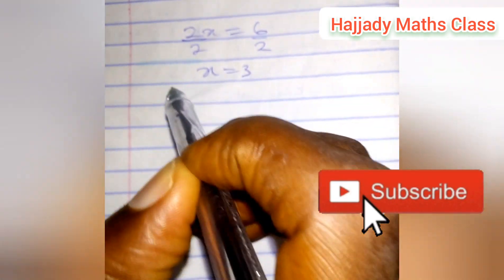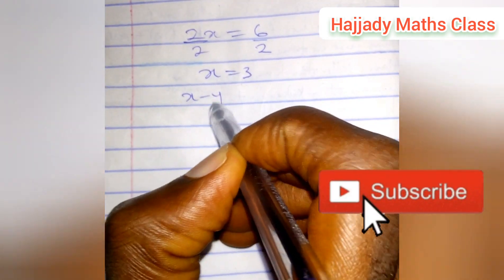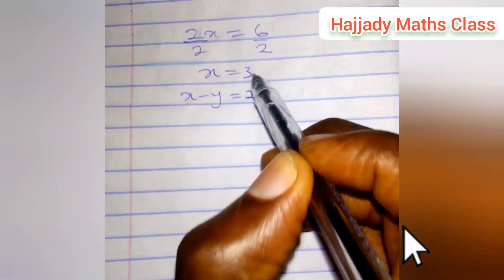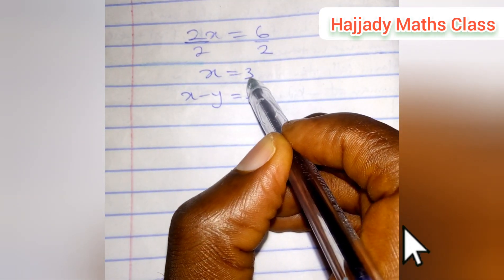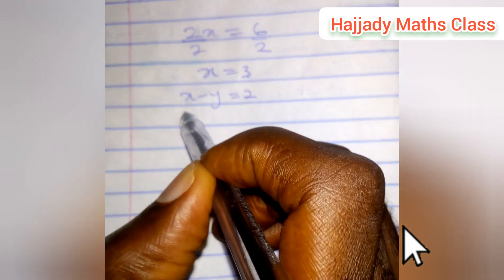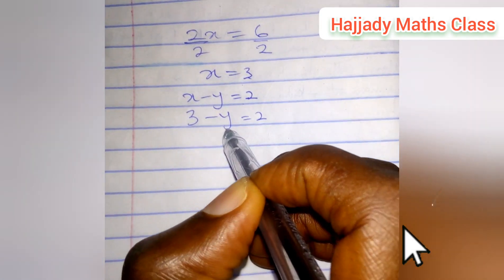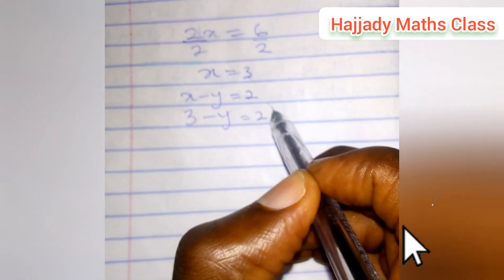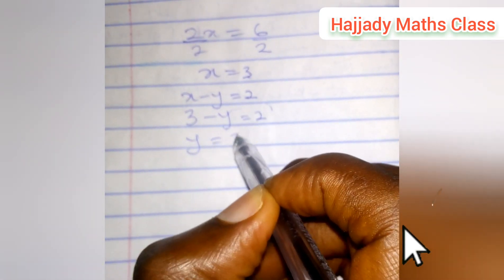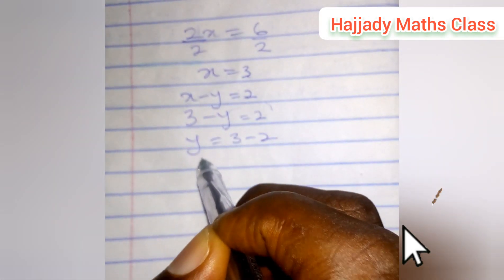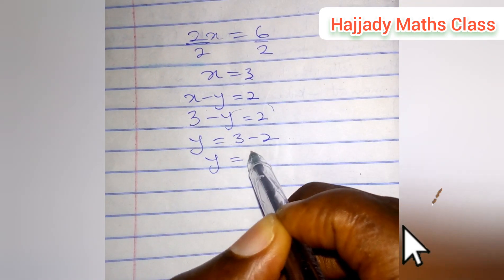Now, substituting this back into equation 1, which was x minus y equals 2. So the value of x is being replaced with 3. So here we have 3 minus y equals 2. So making y the subject of the formula by bringing it here, we have y equals 3 minus 2. Finally, y equals 1.